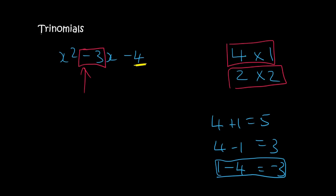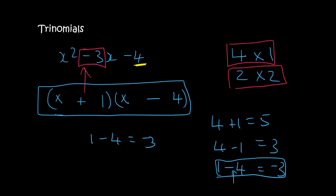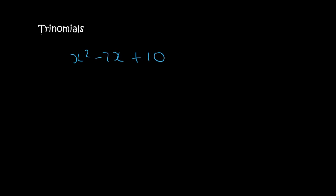So we want 1 minus 4. So what we do is we open up two brackets, where you put x and x, and you put the 1 and the 4. And then we said that the 4 must be minus, and then the 1 is positive, because 1 minus 4 is minus 3. And this will be the answer for that trinomial. Now, it might seem a bit weird at the moment, but we're going to keep practicing.